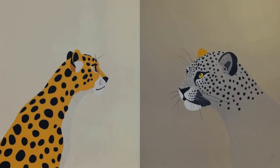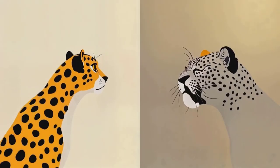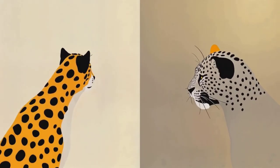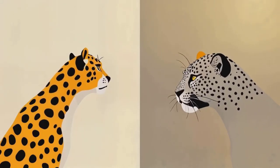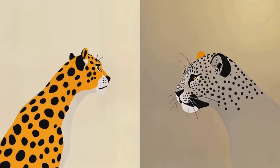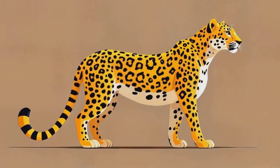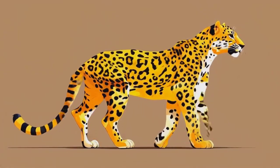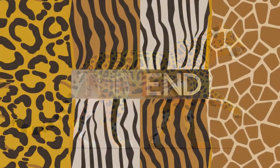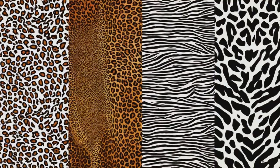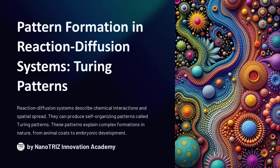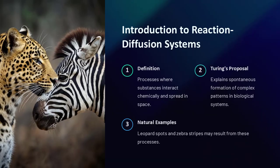The math behind this process is incredibly precise. On an animal's body where there's more space, you get spots, but on thinner areas like legs or tails, the same equations produce stripes. This mathematical model explains why a leopard has spots on its body but stripes on its tail — it's a beautiful fusion of chemistry and mathematics.